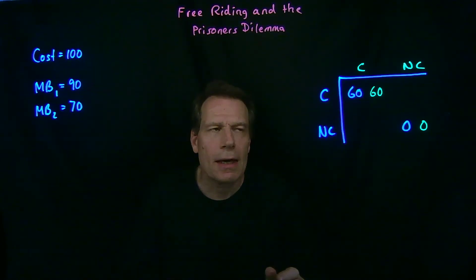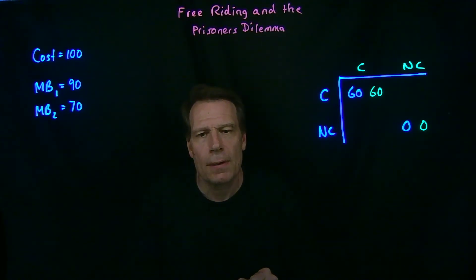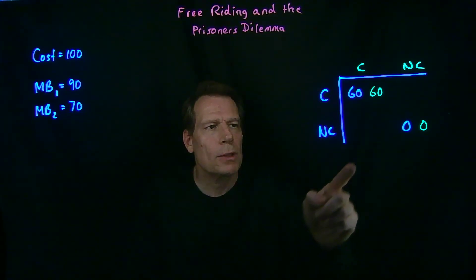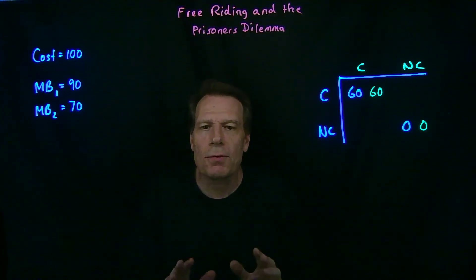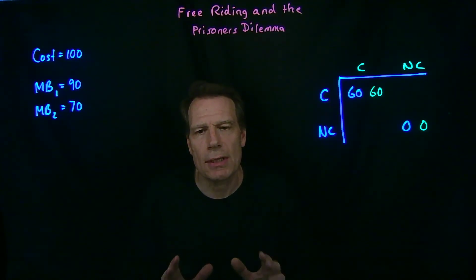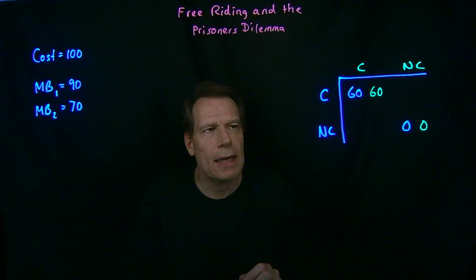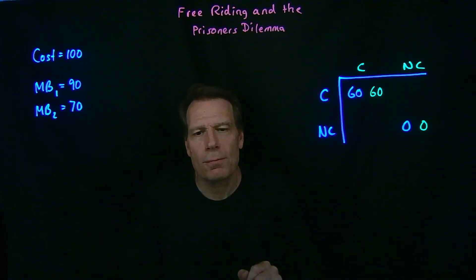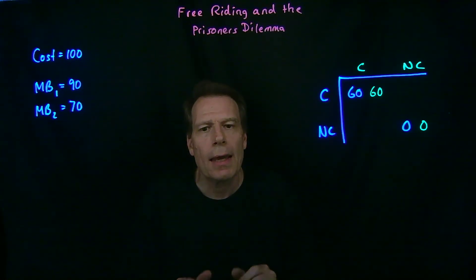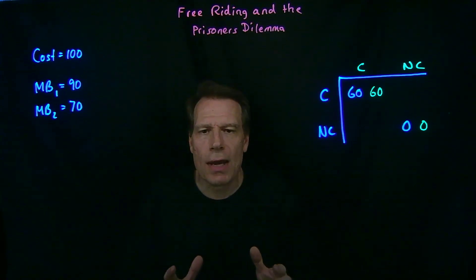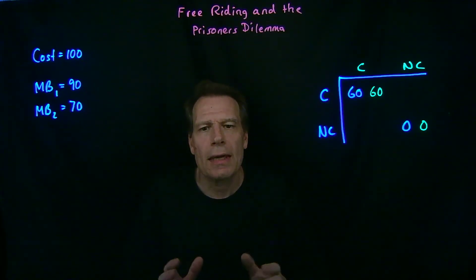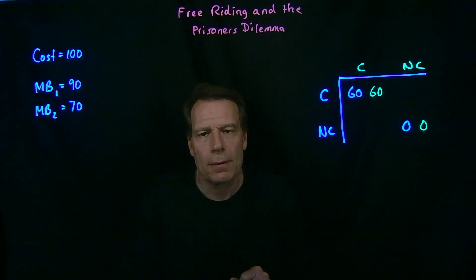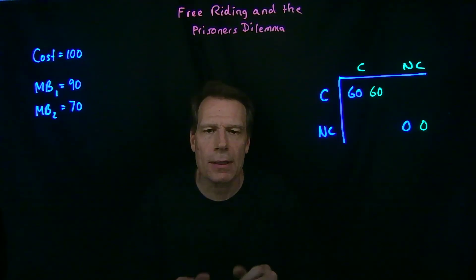Before the next quiz, I'd like you to fill in the rest of this matrix. What would be my surplus if I contributed and you didn't? What would be your surplus? And what if you contributed and I didn't? When you fill in the rest of the matrix correctly, you should be staring at the prisoner's dilemma — overall surplus is maximized when we both contribute, but our dominant strategy is to not contribute. Regardless of whether the other person contributes or not, it's in our incentive to not contribute, leading us to the equilibrium where no fireworks go up at all.